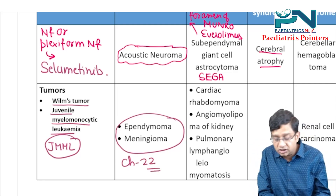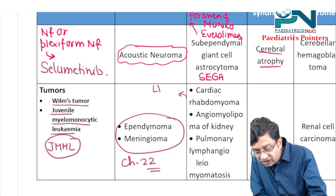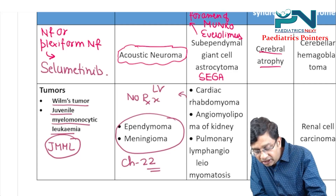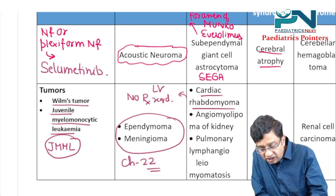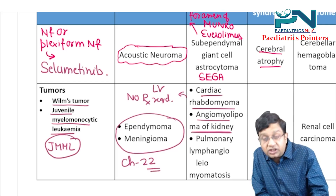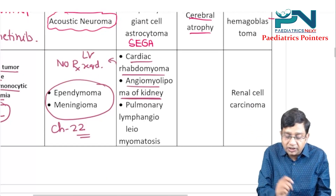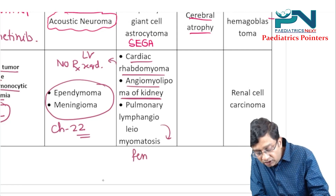In tuberous sclerosis, there are three tumors. First, cardiac rhabdomyoma, which mainly arises from the left ventricle — no treatment is required because there is spontaneous resolution. Second, angiomyolipomas of the kidney. Third, pulmonary lymphangioleiomyomatosis, which is a tumor seen only in females.